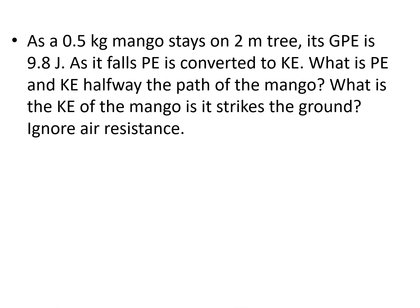Let us apply this law in the given problem. As a 0.5 kilogram mango stays on a 2 meter tree, its gravitational potential energy is 9.8 joules. As it falls, PE is converted to KE. What is PE and KE halfway the path of the mango? And what is the KE of the mango as it strikes the ground? Ignore air resistance.